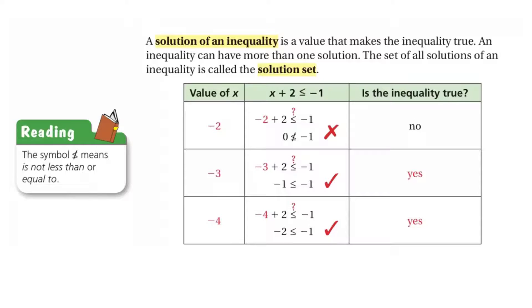Well, let's put another value in for x, negative 3. Negative 3 plus 2 is less than or equal to negative 1. When we solve the left-hand side, negative 3 plus 2, we get negative 1. Negative 1 is less than or equal to negative 1? Yes. It is equal to negative 1, so we get a yes. And if we put negative 4 in, the inequality works out to be correct, because negative 2 is less than or equal to negative 1. So, we get a yes for that as well. Those are solutions to the inequality.